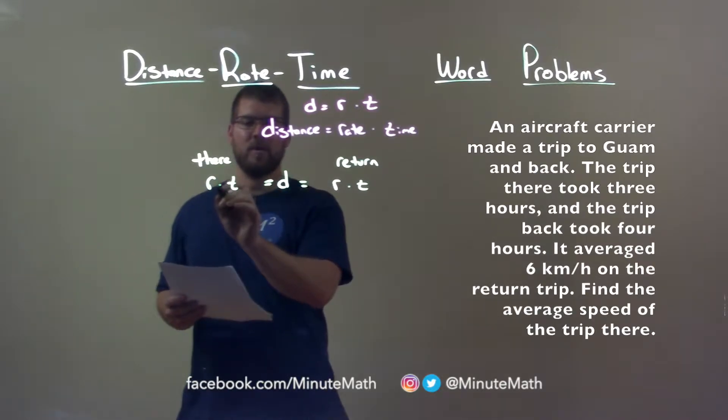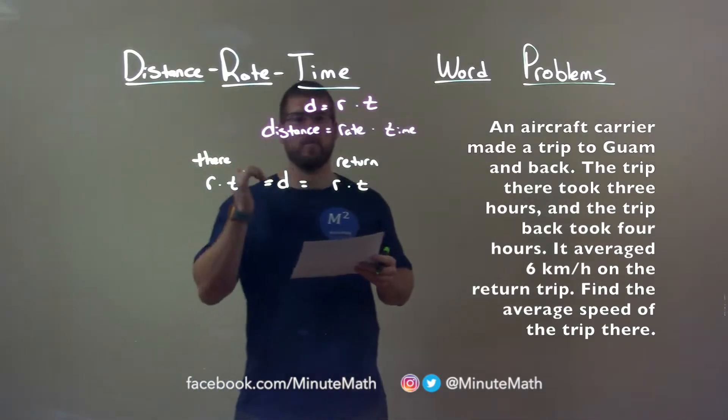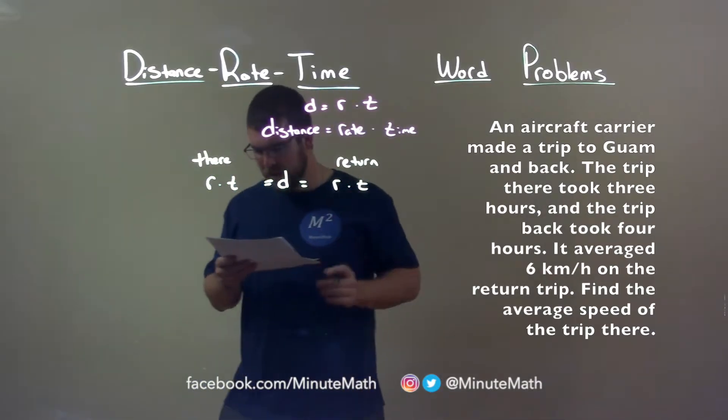Now we have to figure out what the rate and time are for the trip there and return back. We're trying to find the average speed on the one there, this r right here.